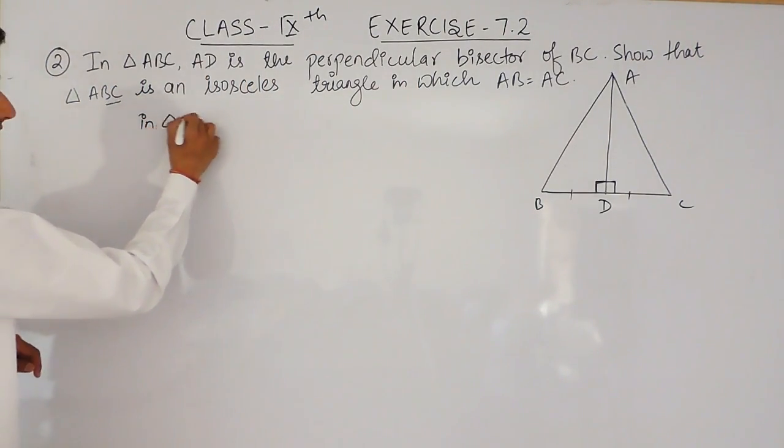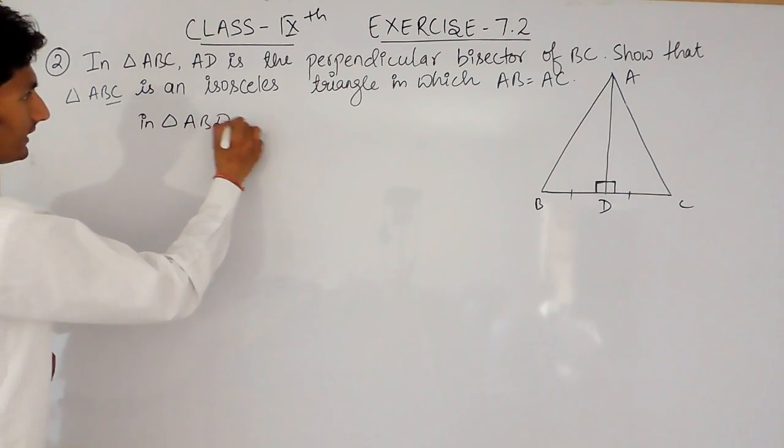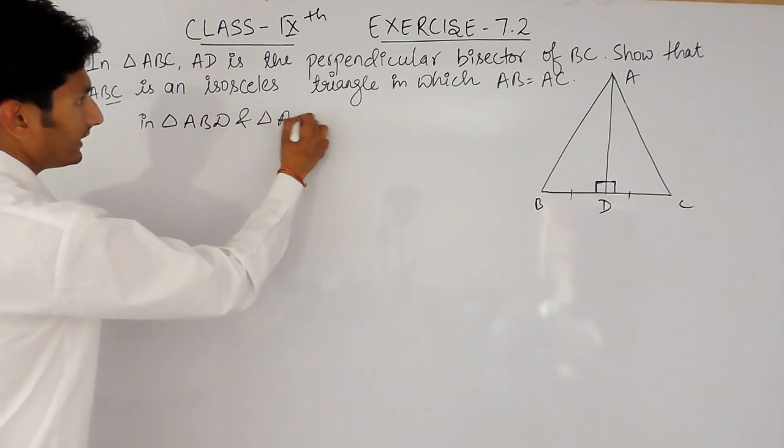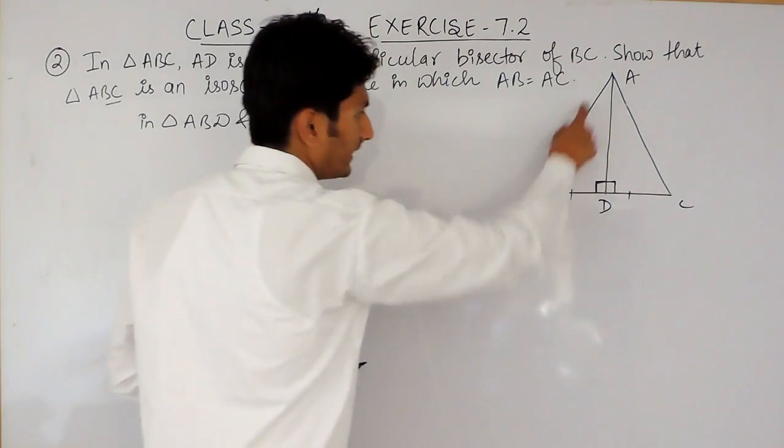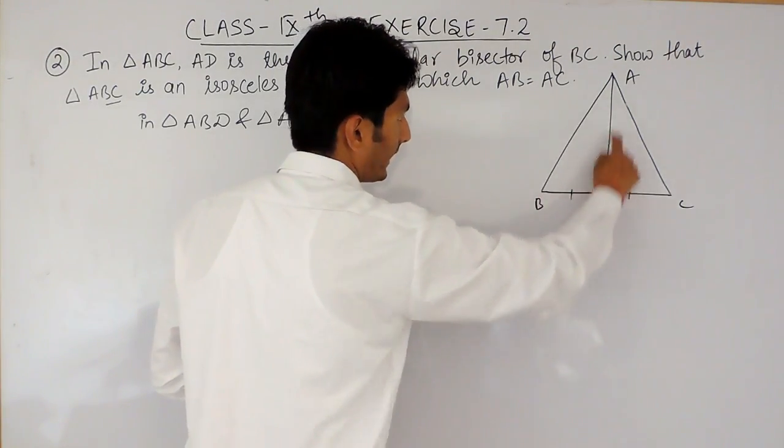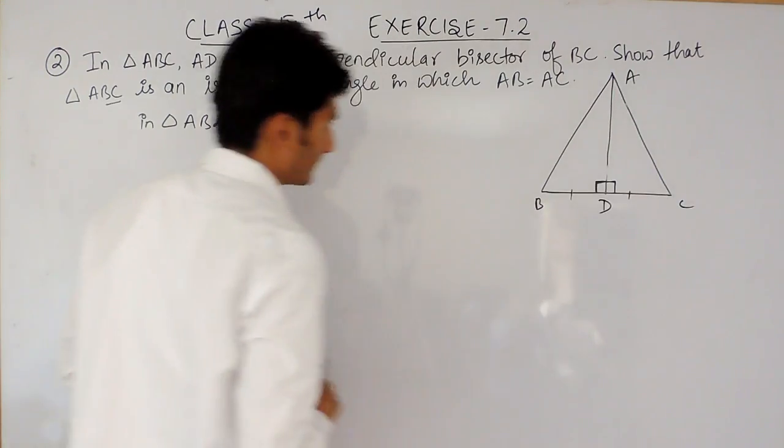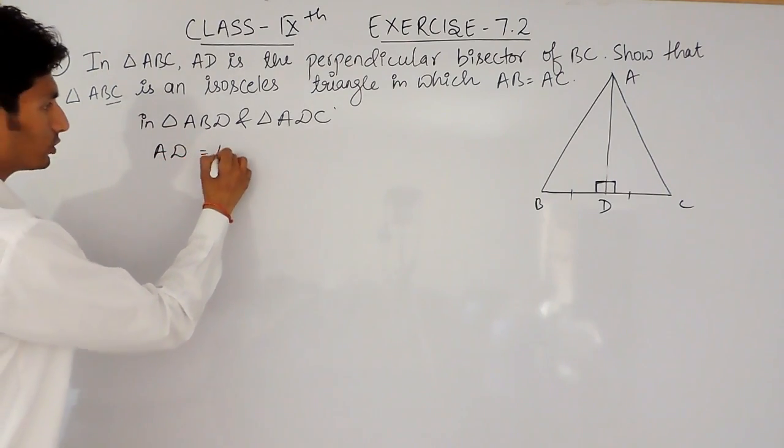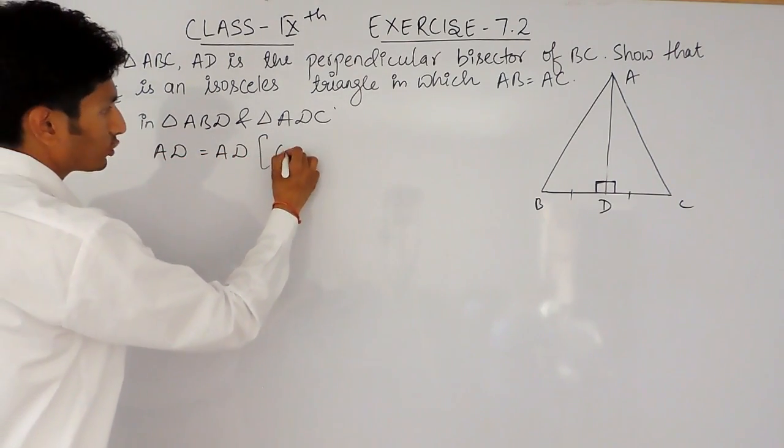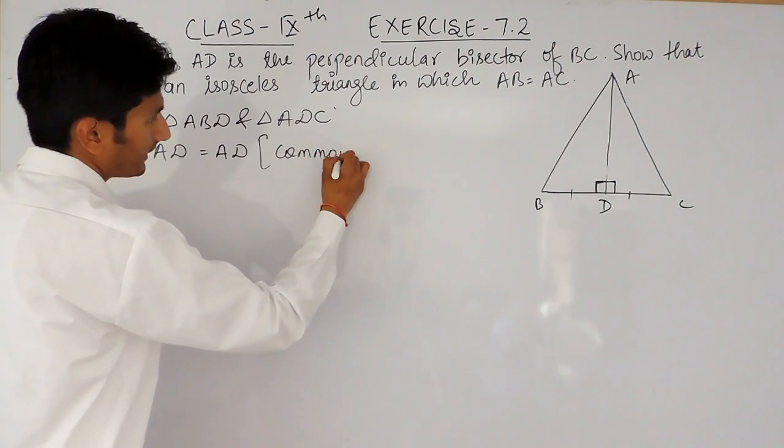We are working in triangle ABD and triangle ADC. This is ADB, this one, and ADC, this one. In this, AD equals AD. This is common side in both the triangles.